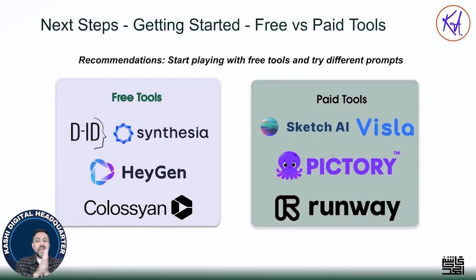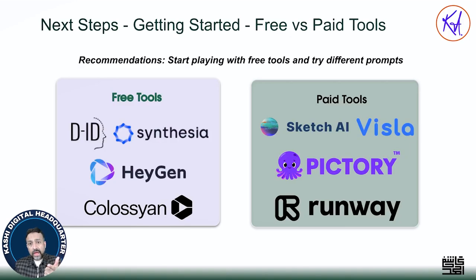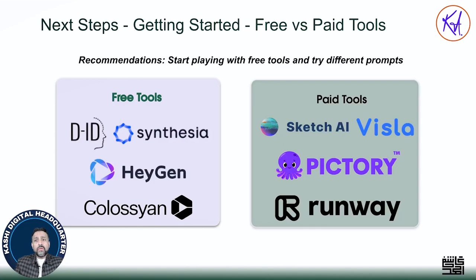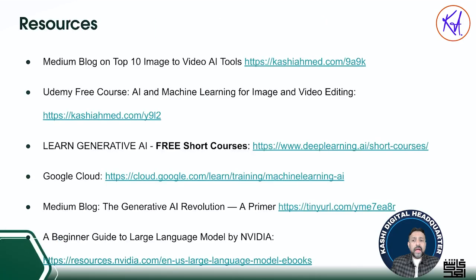My favorites are D-ID and HeyGen. Two more tools I highly encourage you to explore are Pictory and Runway ML — those are very popular. They do more than just image-to-video and have other features too, but image-to-video is their main value proposition. Please check them out and try different prompts.